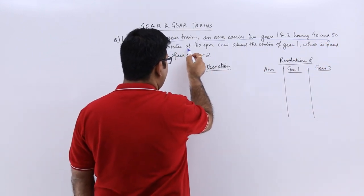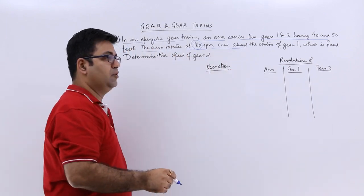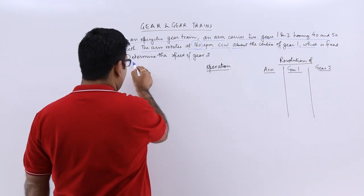The arm rotates at 160 rpm in a counterclockwise direction about the center of gear 1, which is fixed. Determine the speed of gear 2.